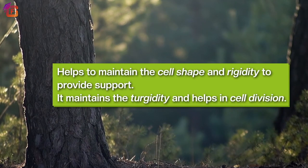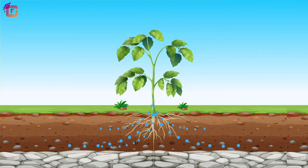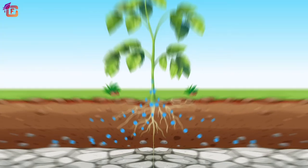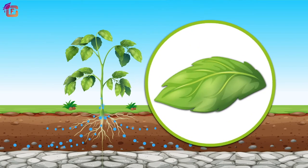Transpiration helps to maintain cell shape and rigidity to provide support, maintains turgidity, and helps in cell division. It also maintains the average temperature of the plant by providing a cooling effect. Due to the continuous process of transpiration, the balance of water is maintained within the plant.